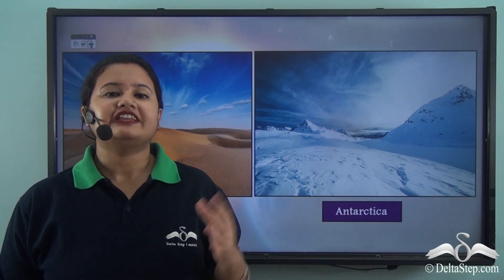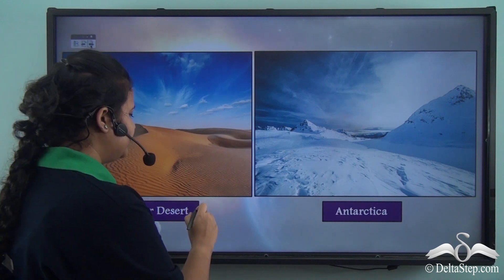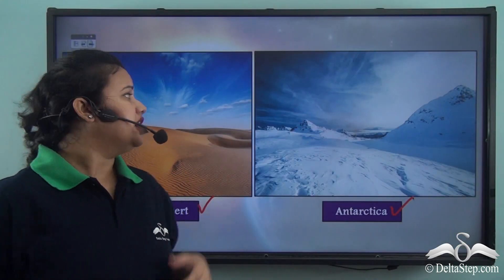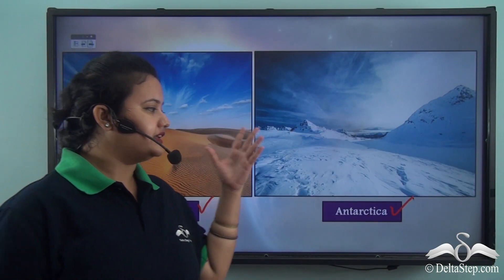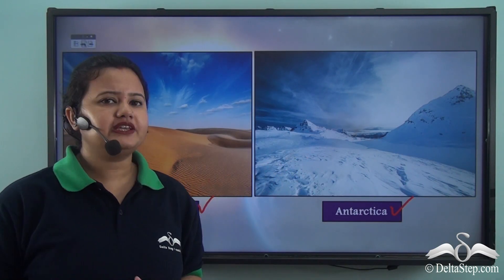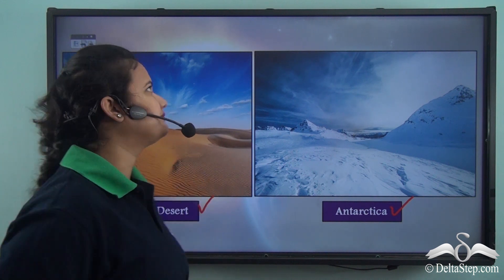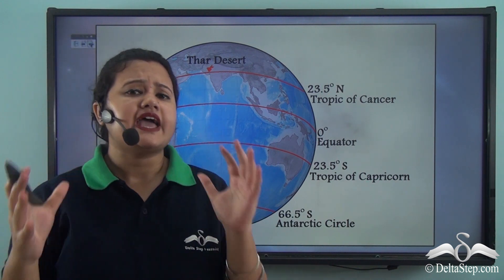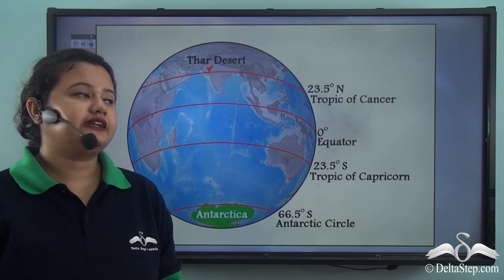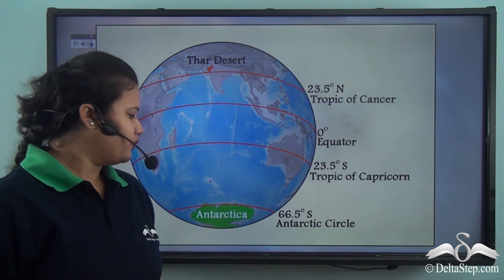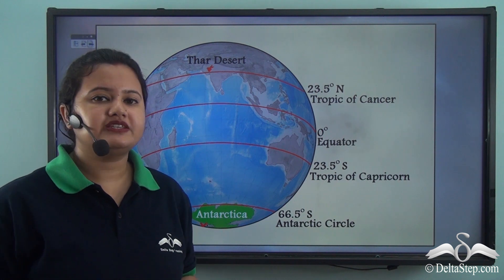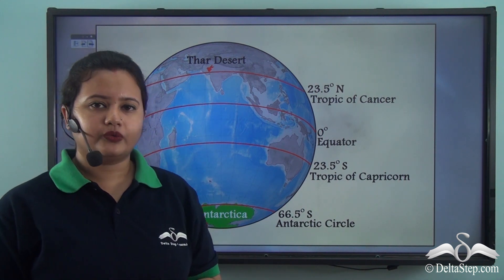Look at these two pictures. The first picture is of Thar Desert and the second picture is of Antarctica. We know Thar Desert is too hot while Antarctica is too cold. Now why do you think these two places have different temperatures? These two places experience extreme temperatures because they have different geographical locations.